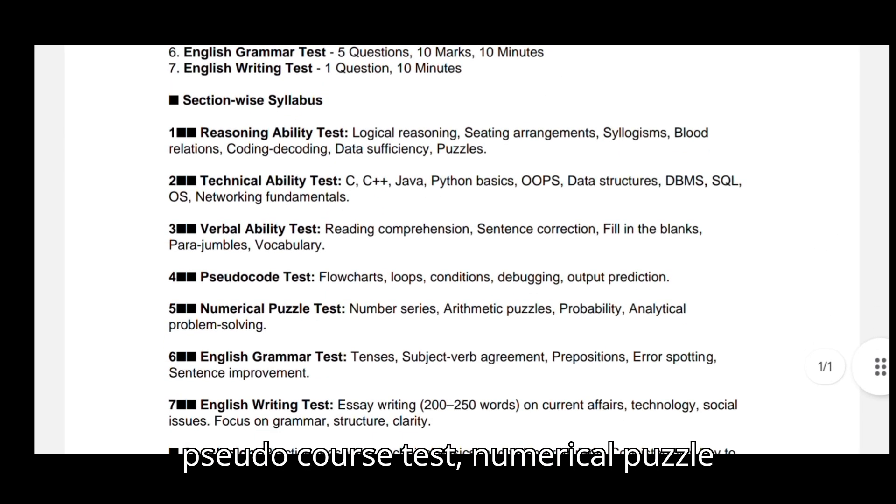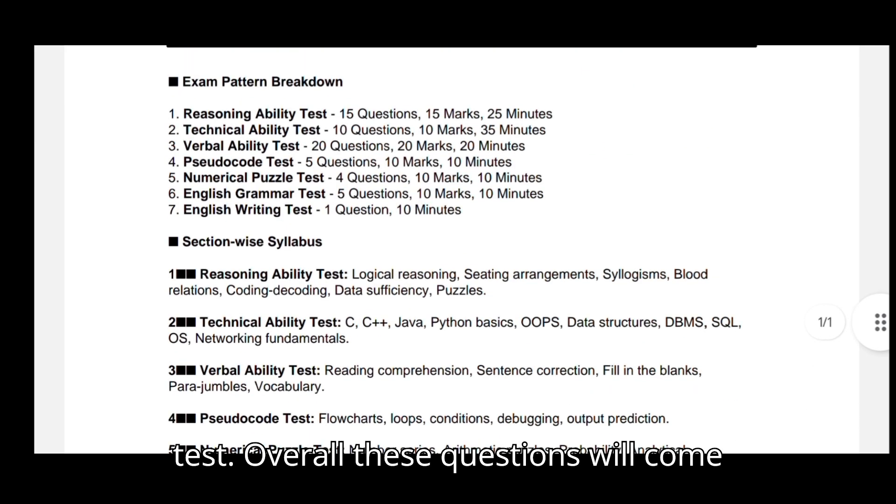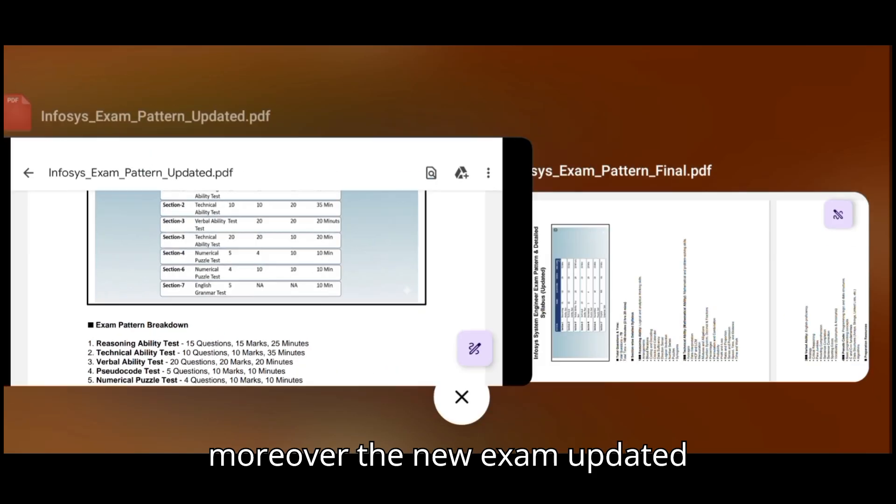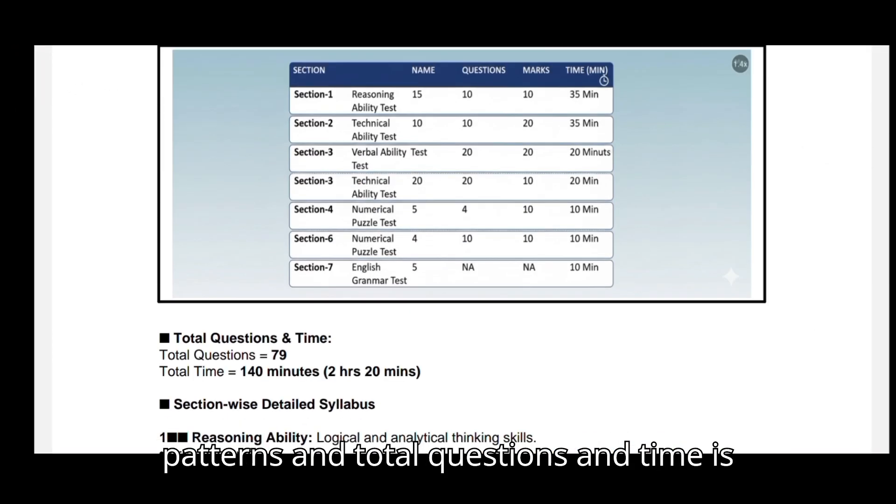So pseudocode test, numerical puzzle test, English grammar test, English writing test - overall these questions will come from the syllabus only. And moreover, the new exam updated pattern has 79 questions and total time is 140 minutes, which means 2 hours 20 minutes.